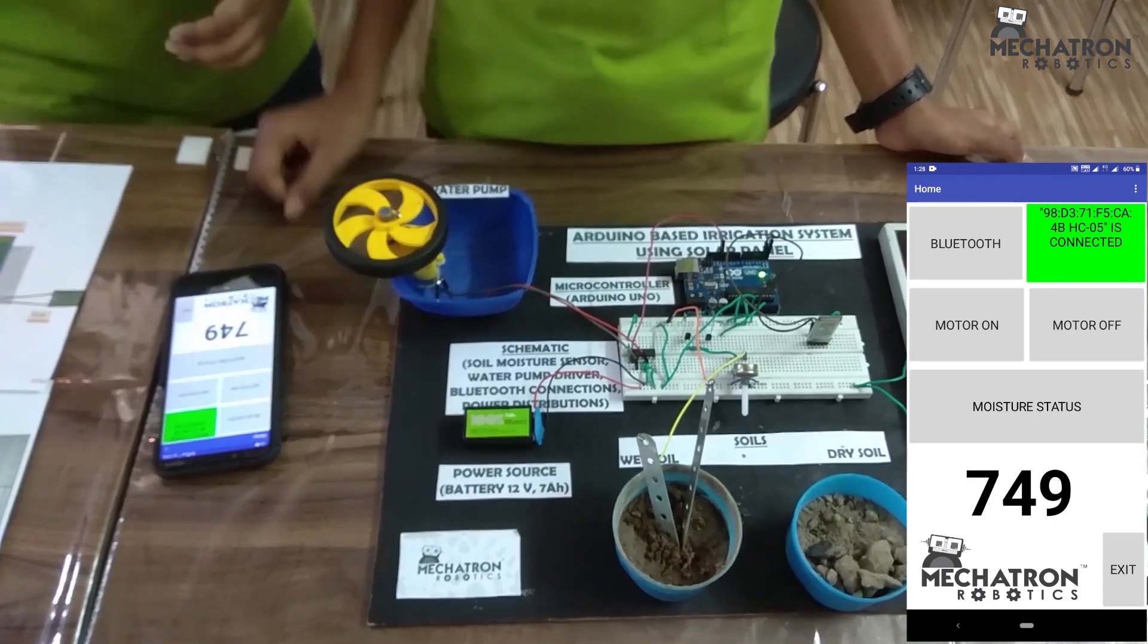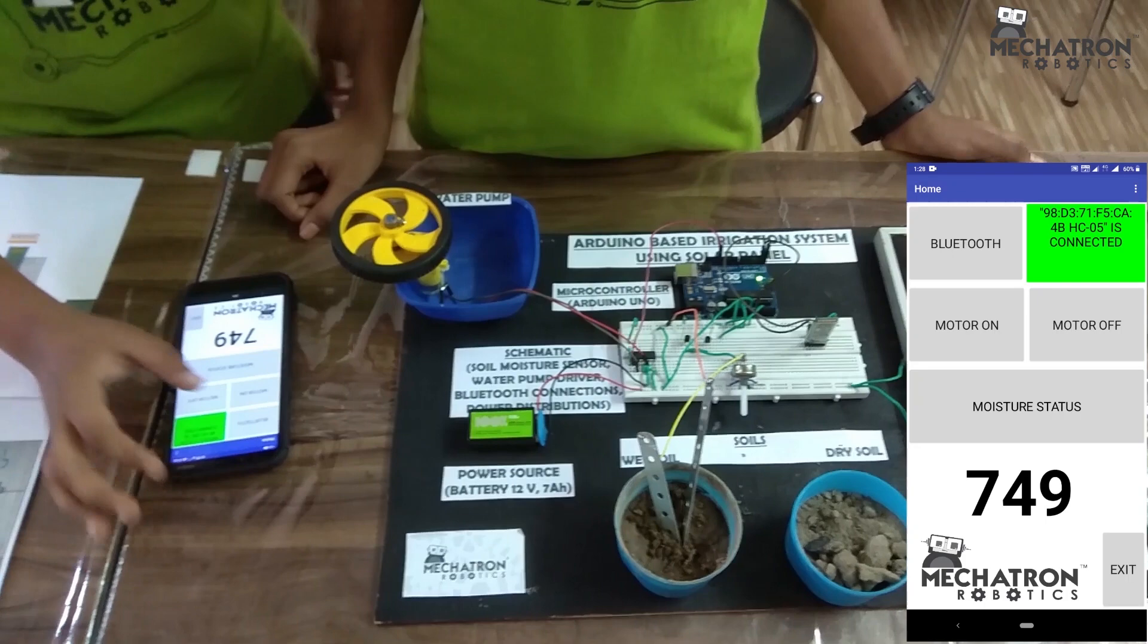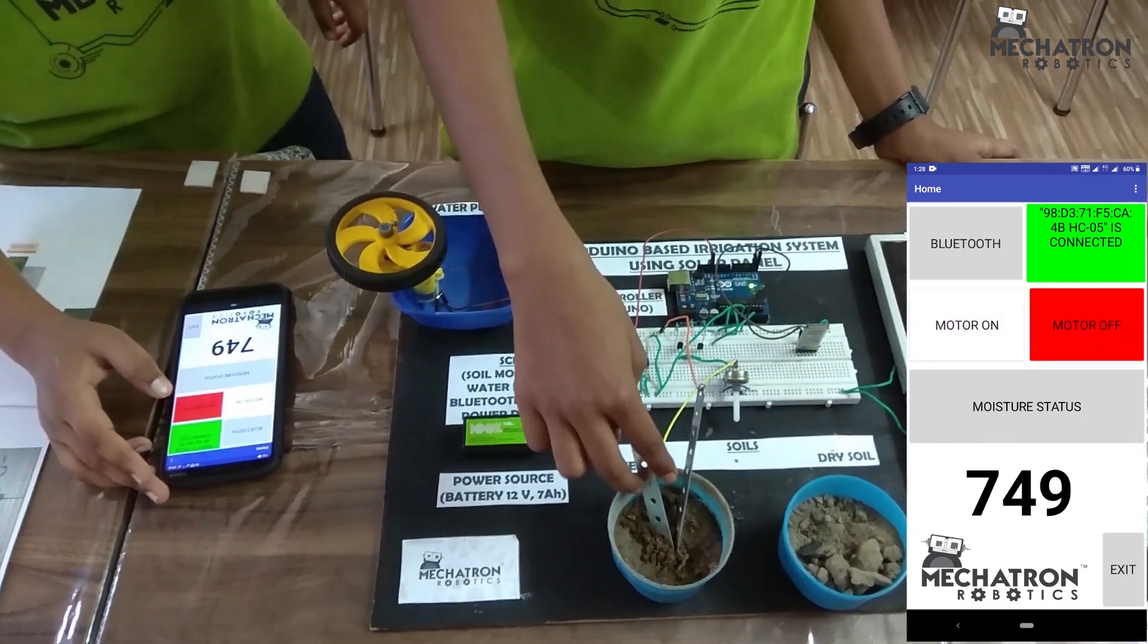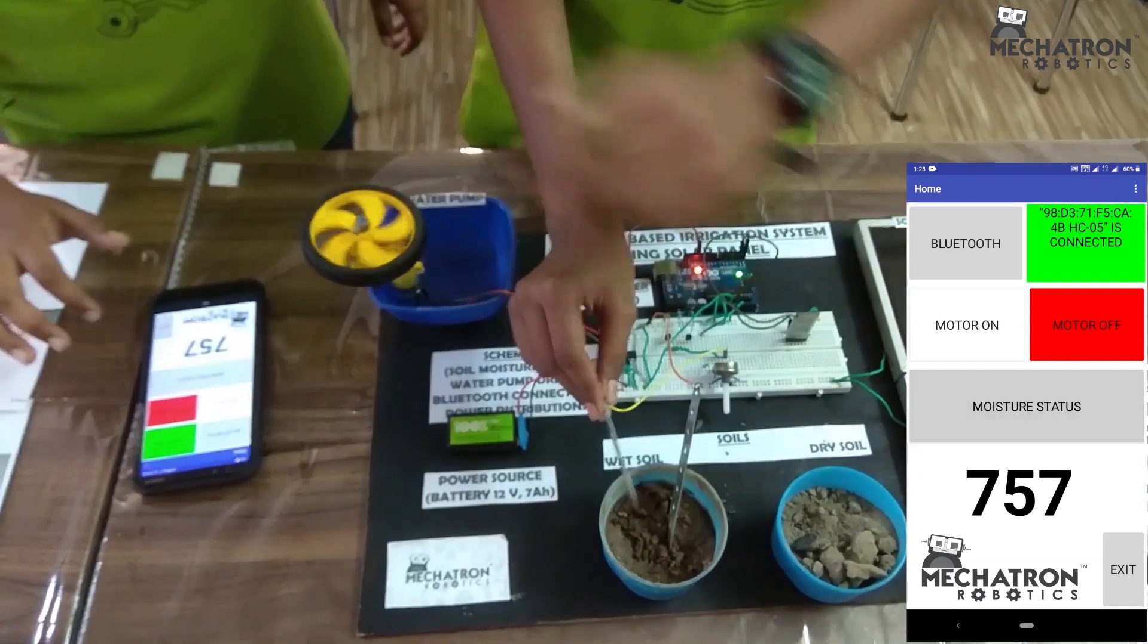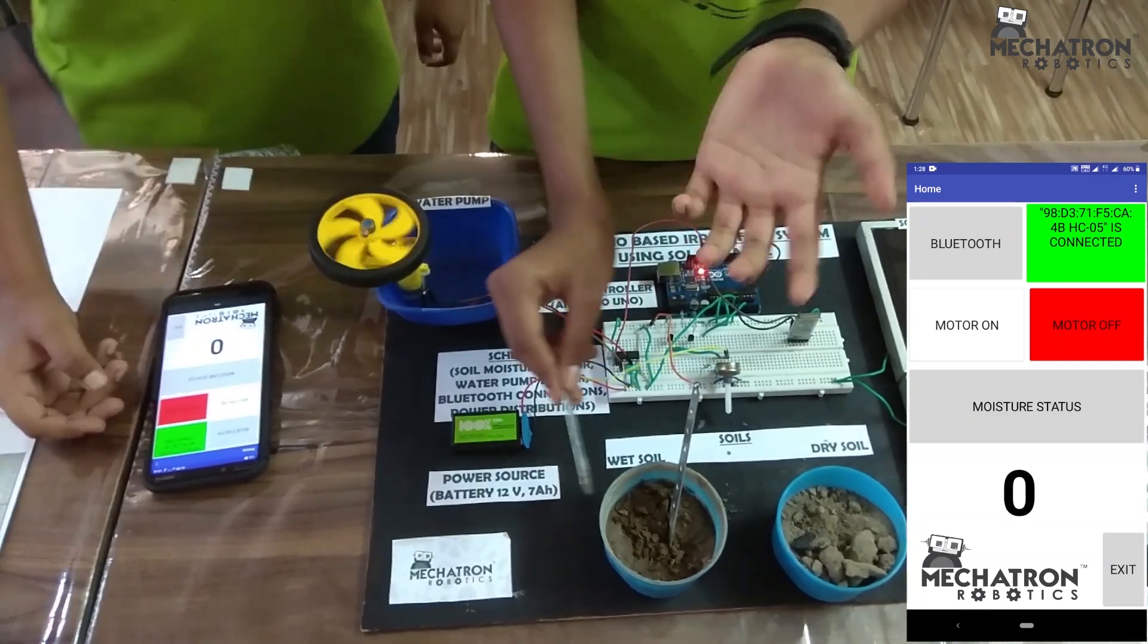But as I told, we can control it manually. We have added motor on and off buttons. Motor is on. Motor is off. And here also we can do it. If we remove this, the motor is on because there is no connection. Soil moisture value is 0.